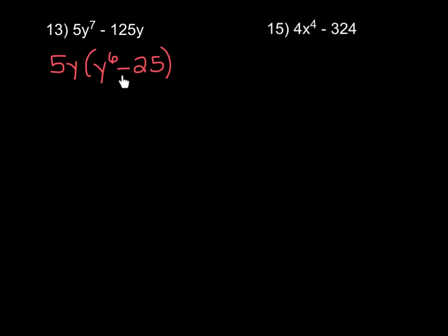We have a difference, and 25 is definitely a perfect square — the square root of 25 is 5. Now is y to the sixth a perfect square? As long as the exponent is even, the answer is yes. When multiplying two terms with the same base, we add exponents, so y to the third times y to the third gives us y to the sixth. That means the square root of y to the sixth is y cubed. So this is a difference of perfect squares — let's keep going.